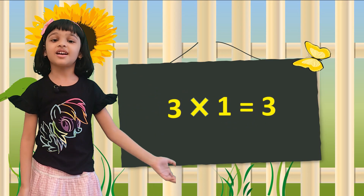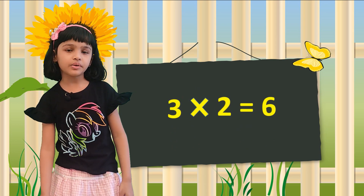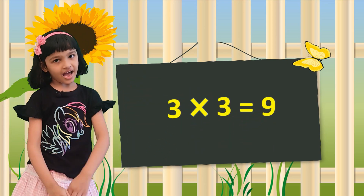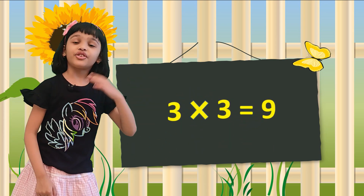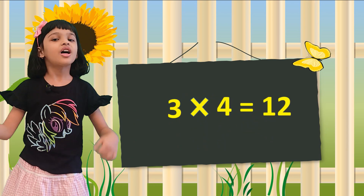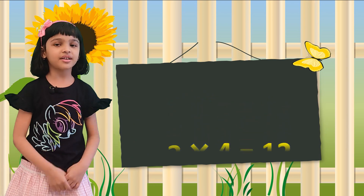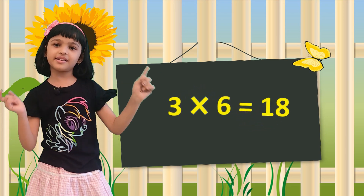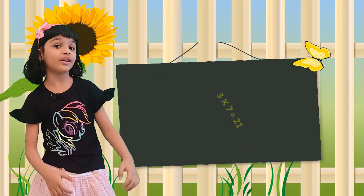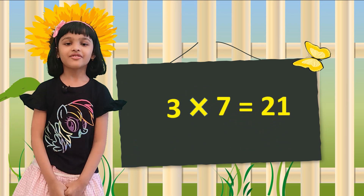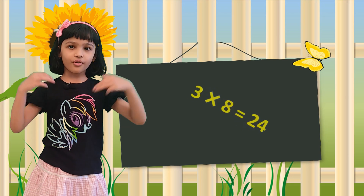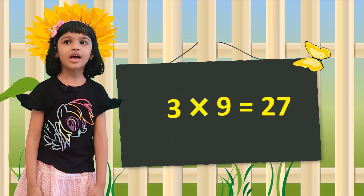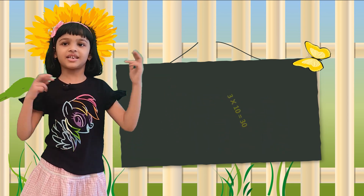3 1 the 3, 3 2 the 6, 3 3 the 9, 3 4 the 12, 3 5 the 15, 3 6 the 18, 3 7 the 21, 3 8 the 24, 3 9 the 27, 3 10 the 30.